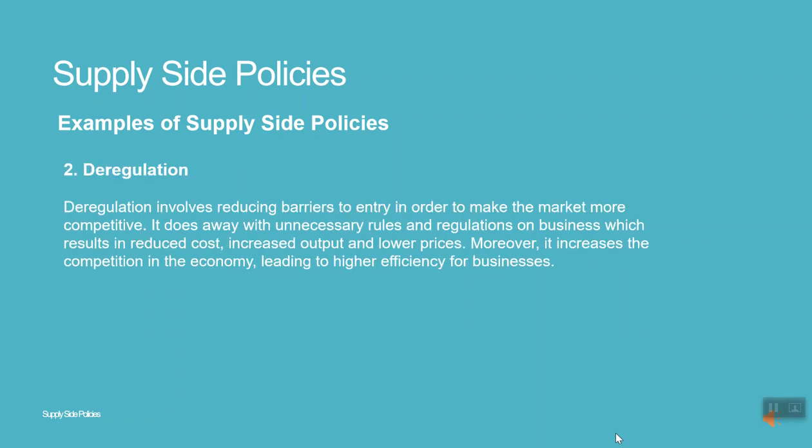2. Deregulation. Deregulation involves reducing barriers to entry in order to make the market more competitive. It does away with unnecessary rules and regulations on businesses, which results in reduced cost, increased output, and lower prices. Moreover, it increases the competition in the economy, leading to higher efficiency for businesses.